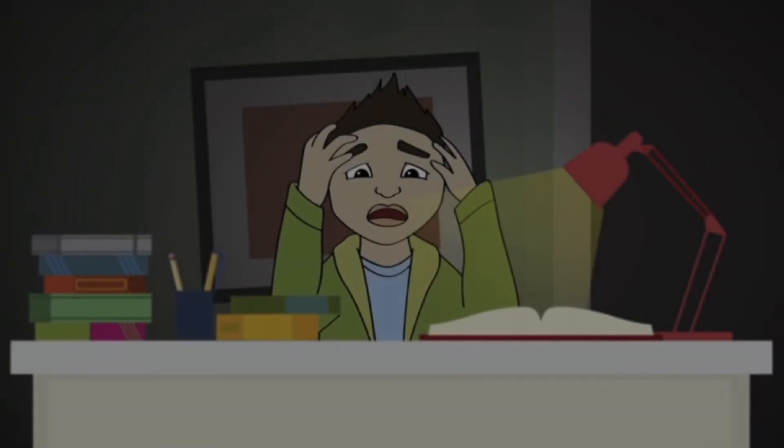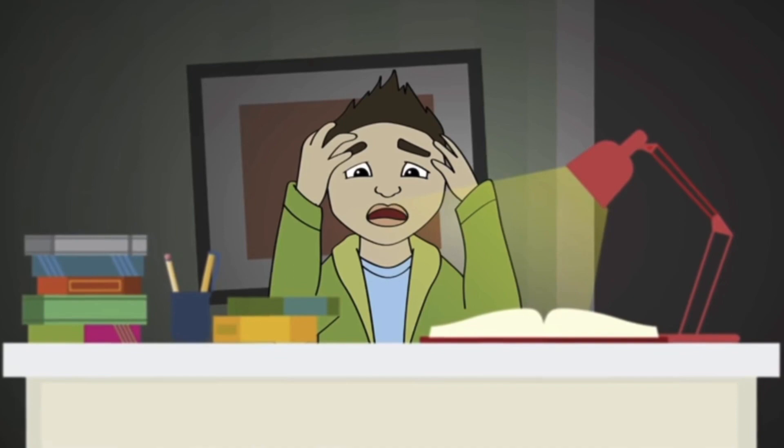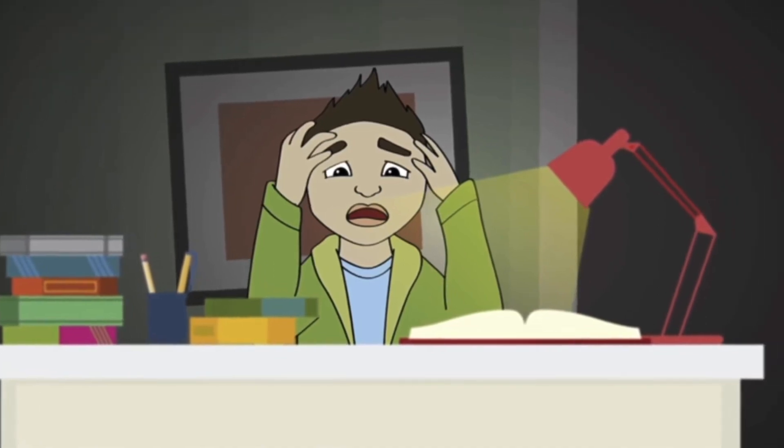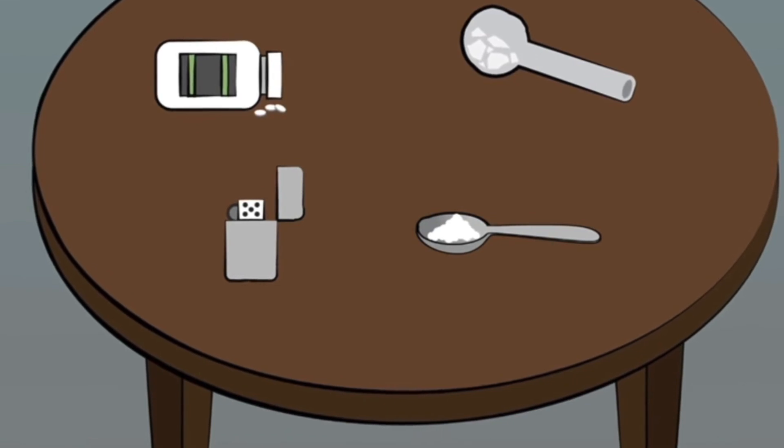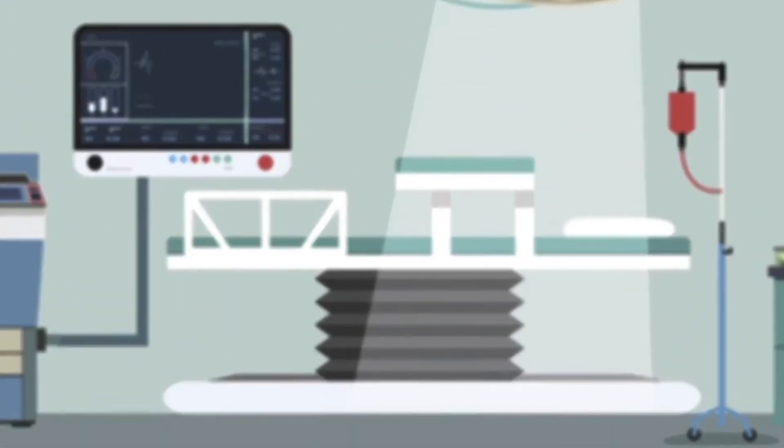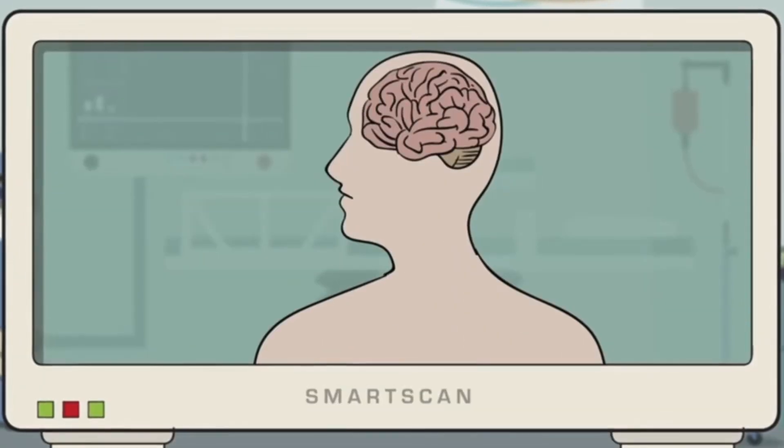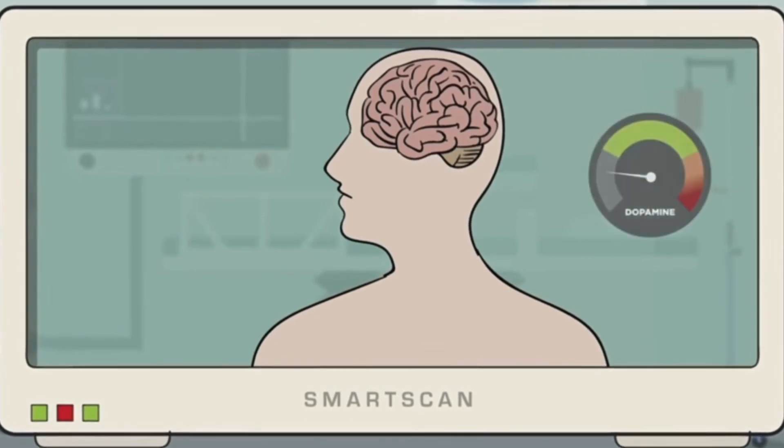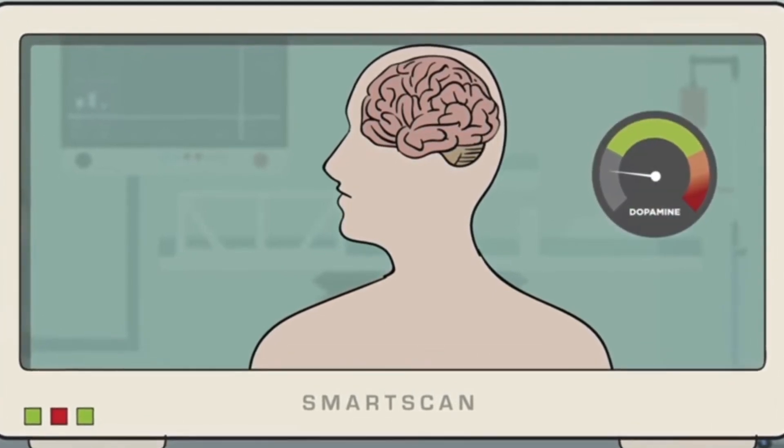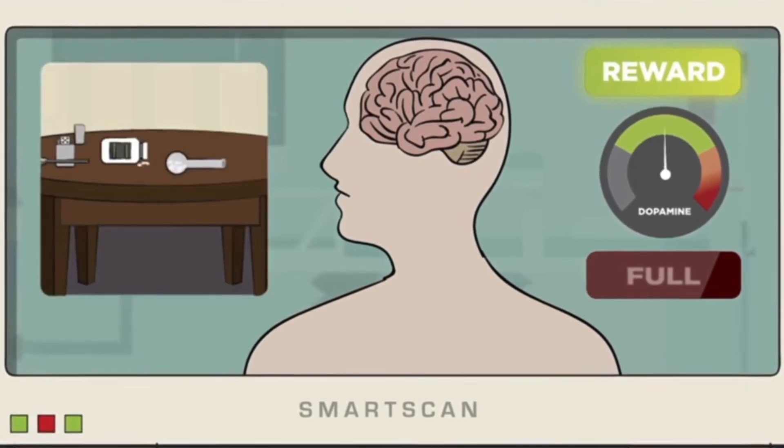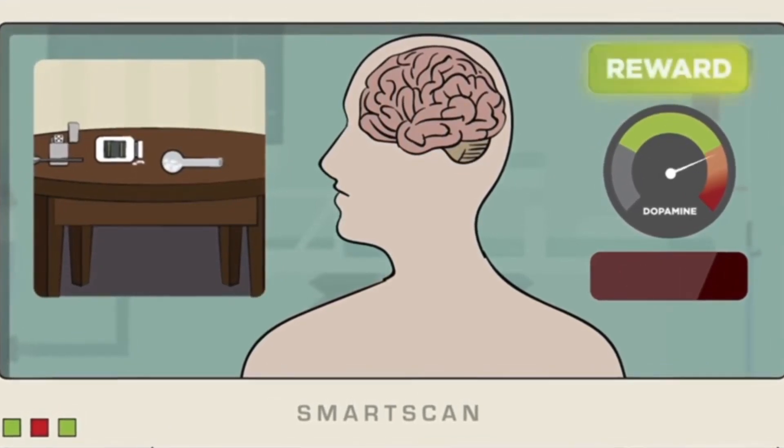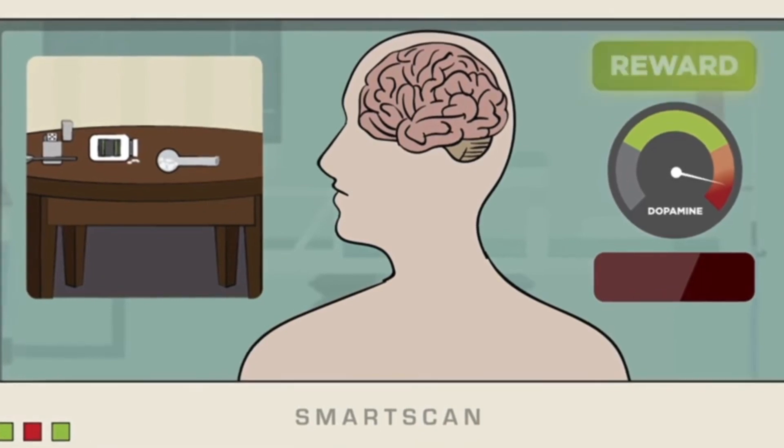Some people will start using methamphetamine to help deal with things. However, it can be highly addictive and expensive. Methamphetamine is a stimulant that speeds up the body and affects the reward pathway in the brain. This pathway uses dopamine to make a person feel good when they are doing things like eating, having fun, or hanging out with friends. Meth forces the release of dopamine in the brain to create feelings of pleasure and confidence.